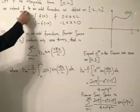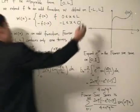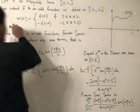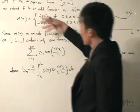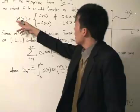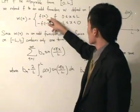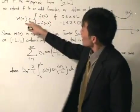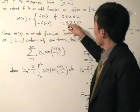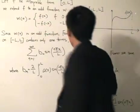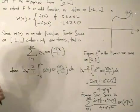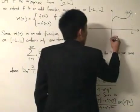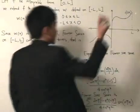We will extend f to an odd function, which in this case we just call w, and w will be defined from -L to L. Basically, that is what we're doing. And if you were to look at the definition of w, you will understand what's happening. w(x) equals f(x) if x is between 0 to L. And w(x) equals -f(-x) when x is from -L to 0.